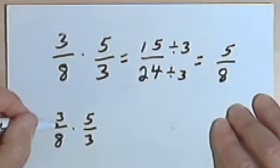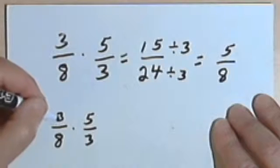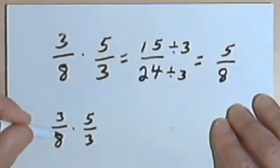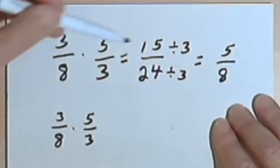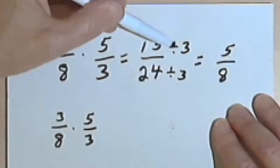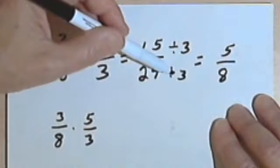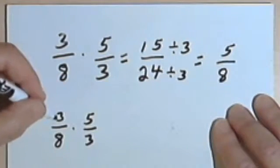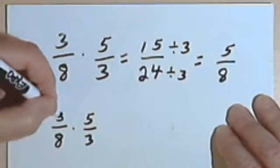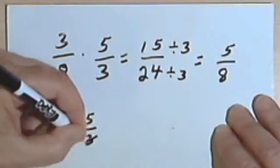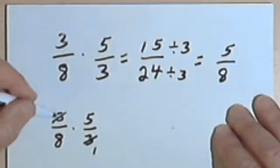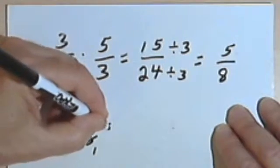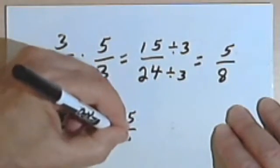And what I'm going to do is divide this 3 by 3 and divide this 3 by 3. In other words, when I did this the first time, I ended up dividing both the numerator and the denominator by 3. Well, if I divide by 3 as the first step, then my multiplication is much easier. It's just 1 times 5 is 5, and 8 times 1 is 8.